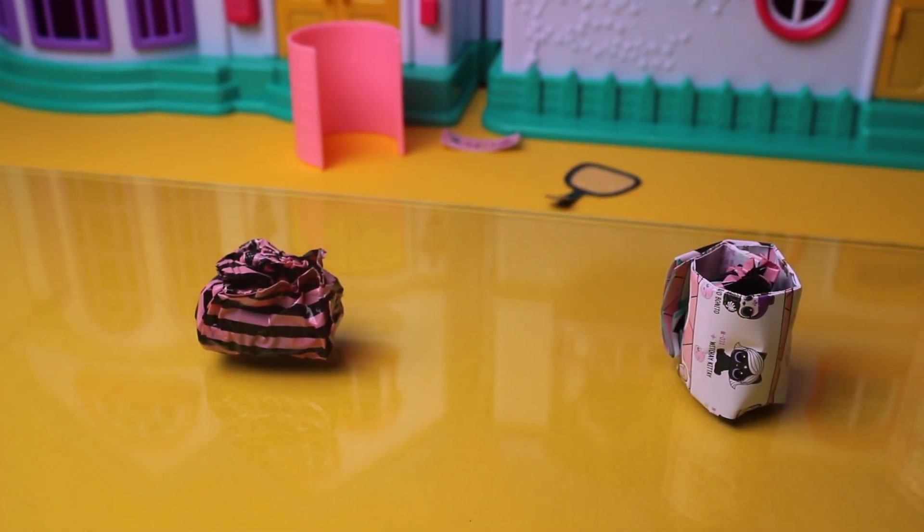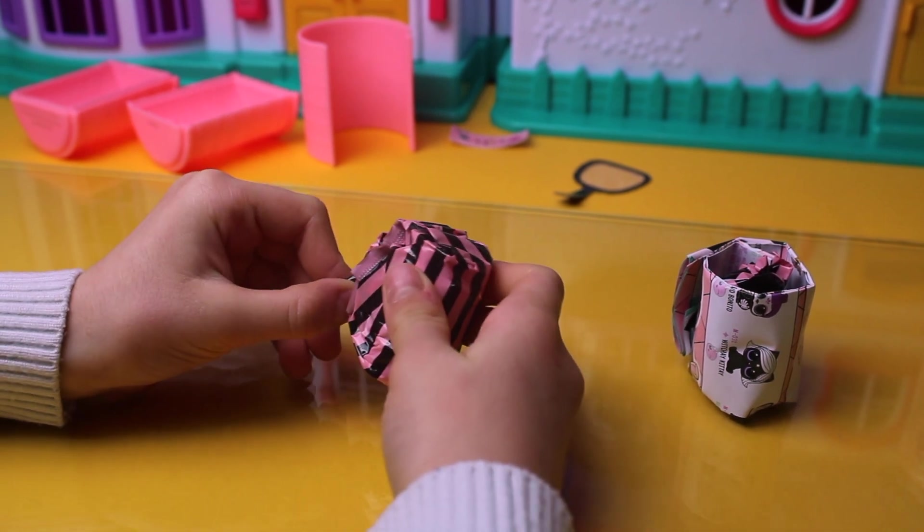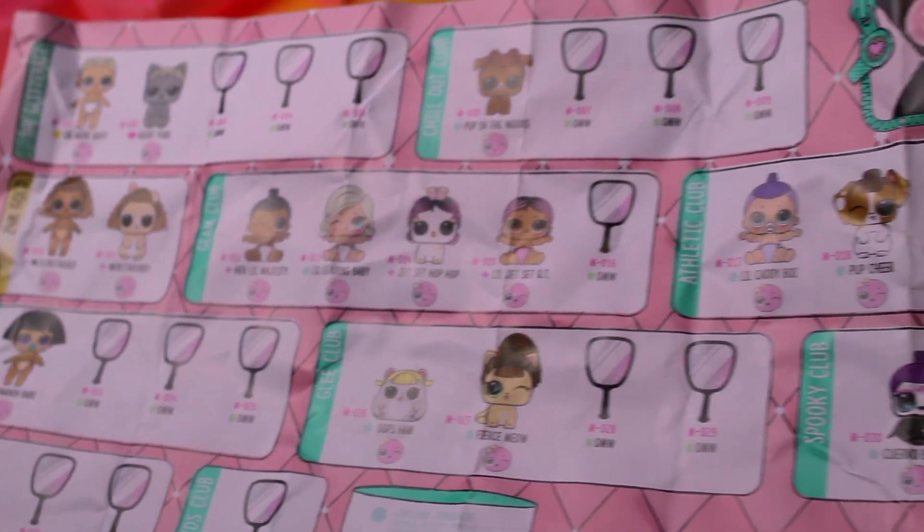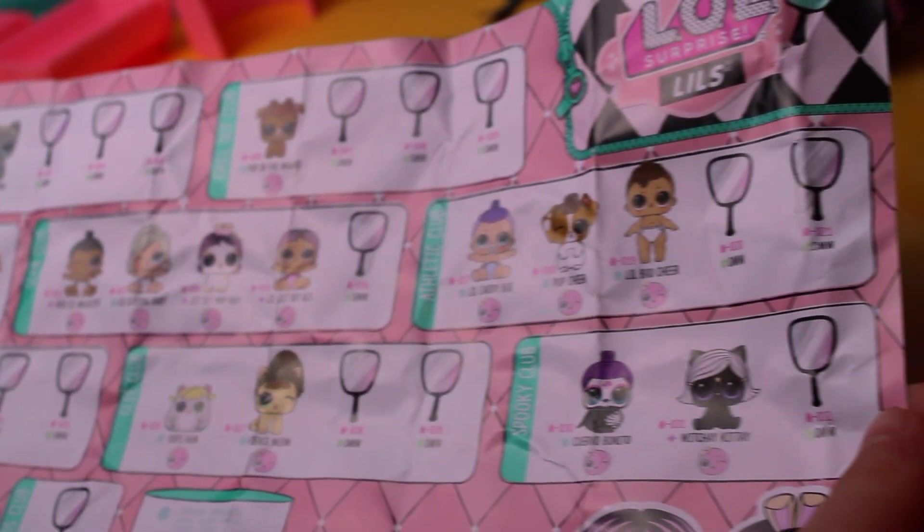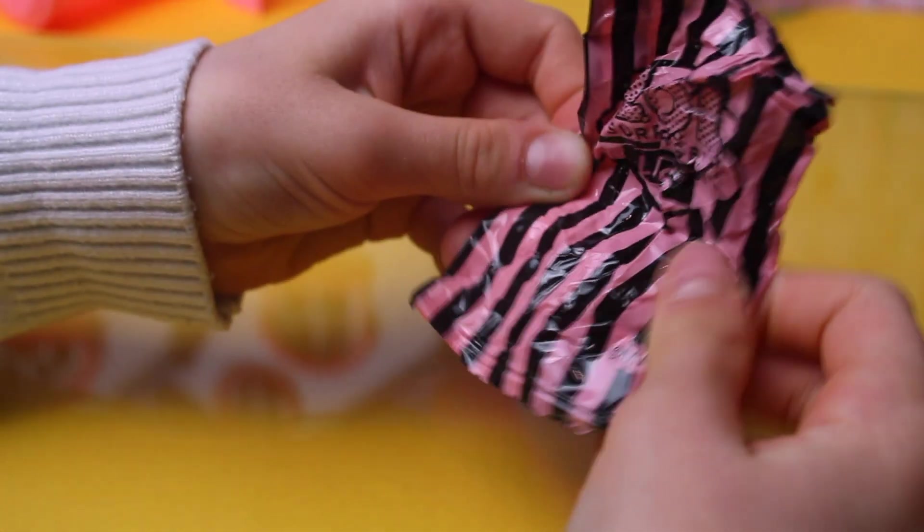There's some pockets. Whoa, that's magic. A pocket came out of another pocket. This is all of the LOL Surprise Lils. So let's open the first pocket, the small pocket. Has to be something small, like shoes.